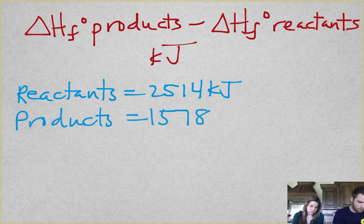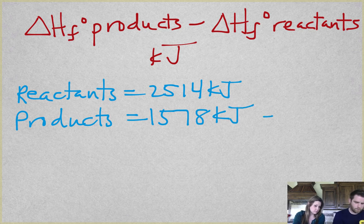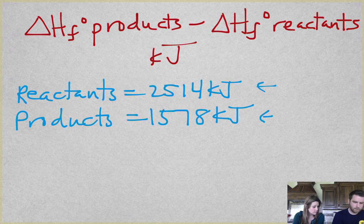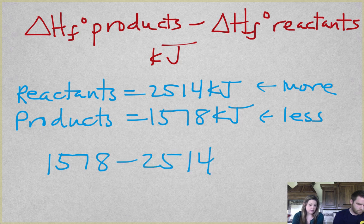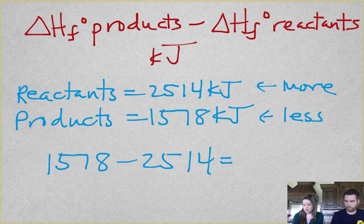So if you look at this, the products have less energy stored than the reactants. We have less energy here, more energy here. So we should just subtract these, just like what it tells us. 1578 minus 2514, which will give you a negative number.